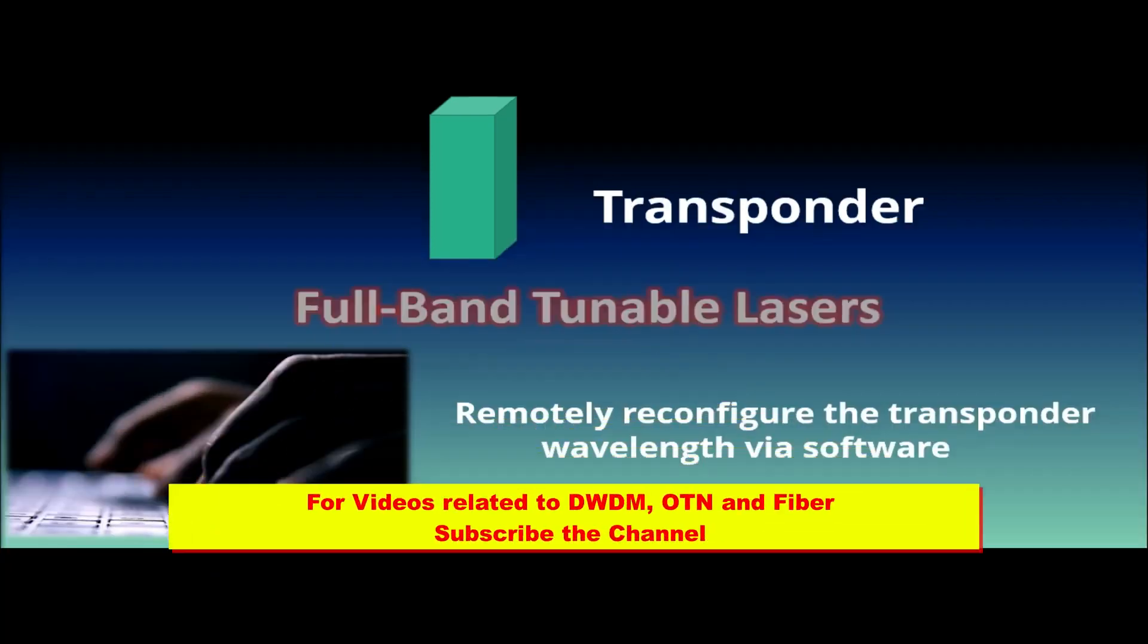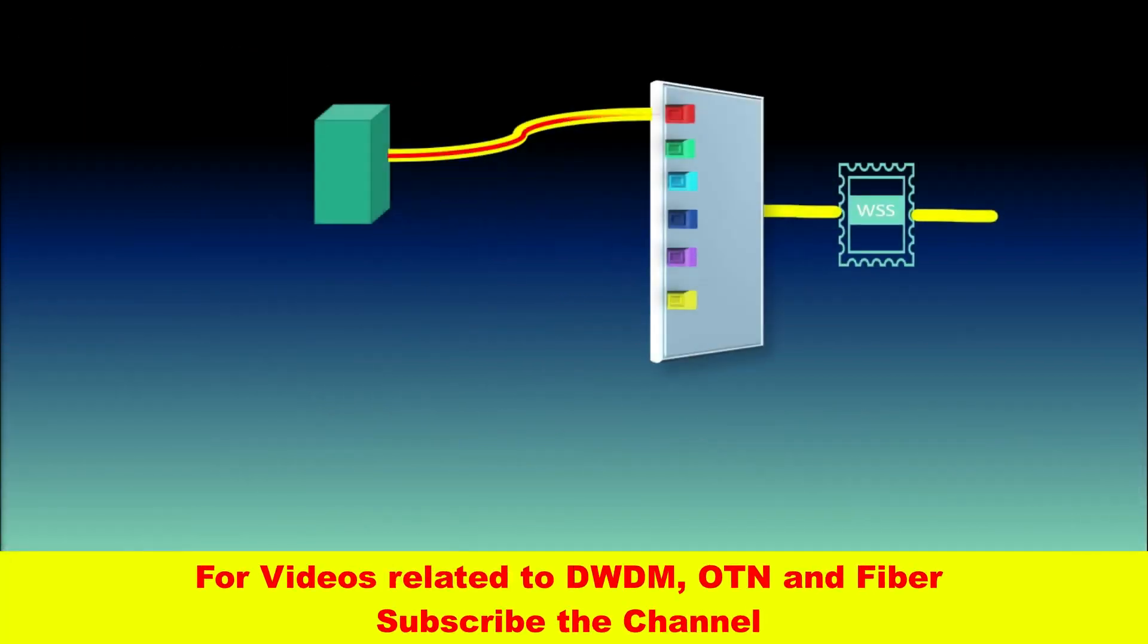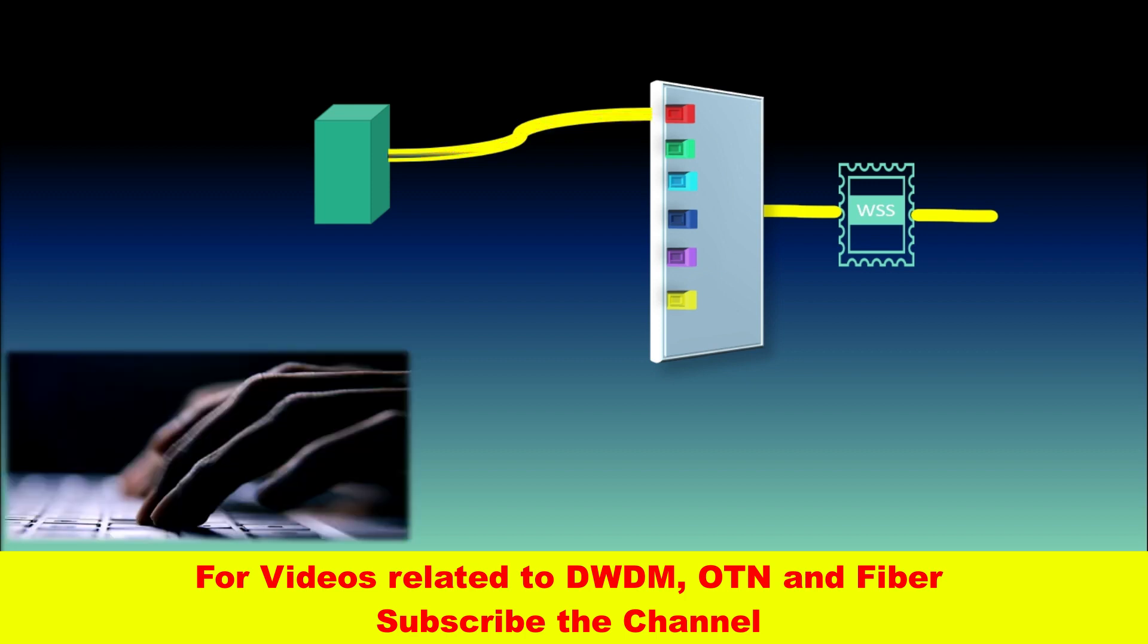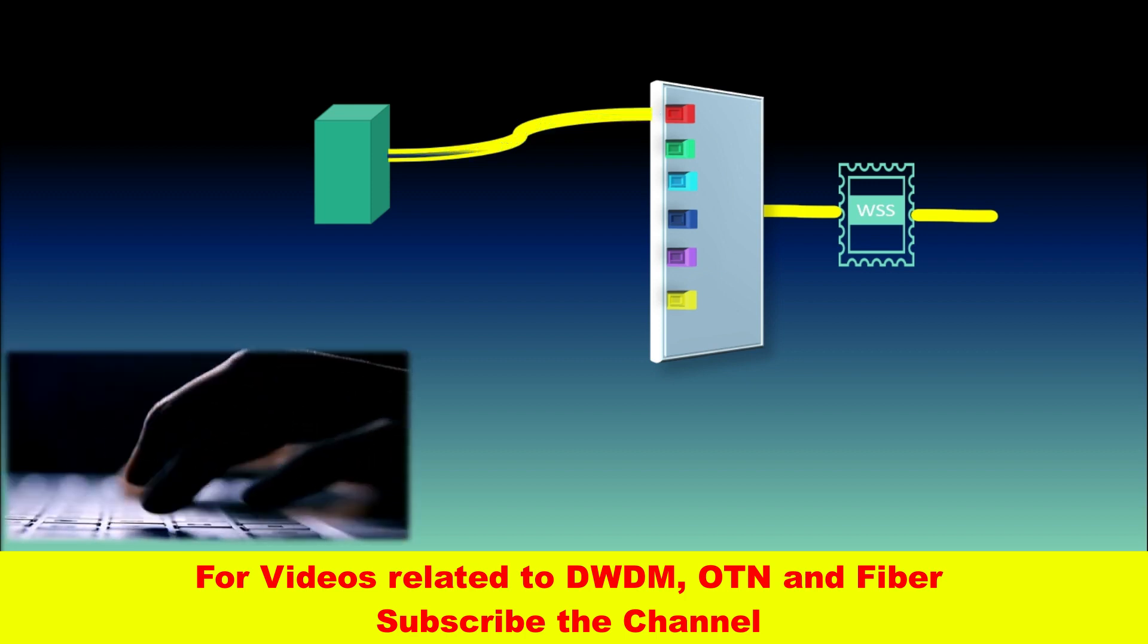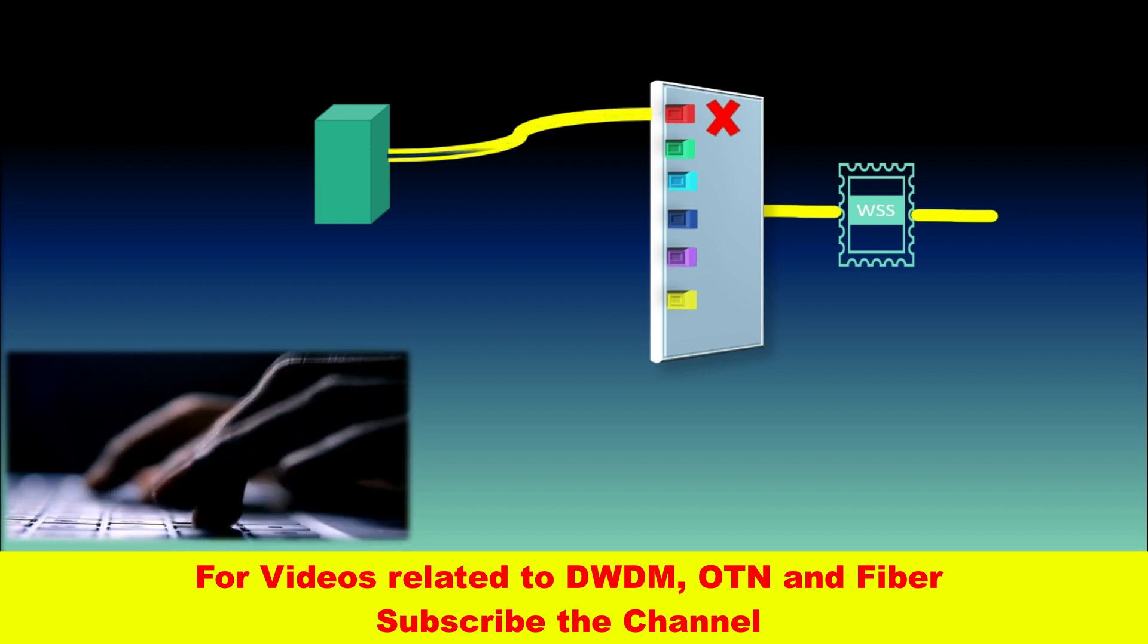There was no longer a need to physically change the optics. This was a great convenience. But once the wavelength changed, the transponder was no longer connected to the correct ROADM port, and traffic was blocked.